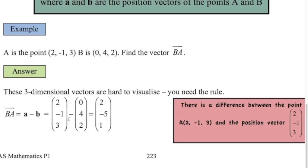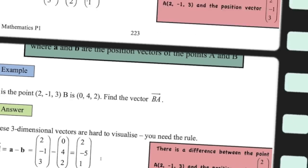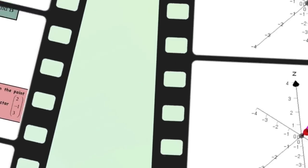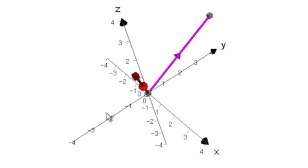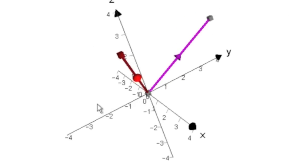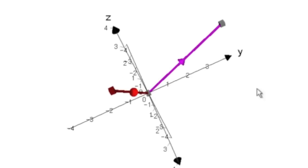Pretty simple: 2 minus 0, minus 1 minus 4, and 3 minus 2. There we go — there's the vector that takes us from B to A. So we've got two position vectors there for the two different points, and now I want to know how we get from B to A.